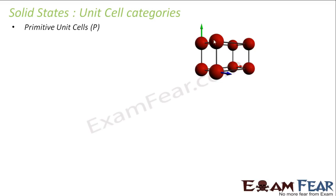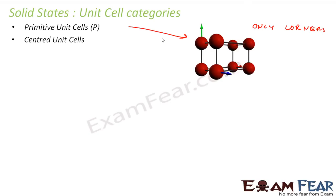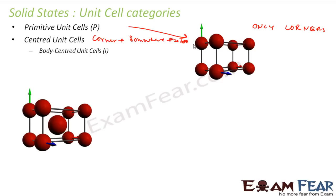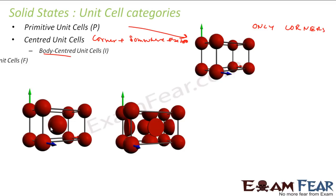Then we have centered unit cells, where the constituent particles are present on the corners plus somewhere else — maybe inside the body or on the edges or faces. There are three types. The first is body-centered, where atoms are present on the corners plus the center of the body — that is why it is called body-centered.